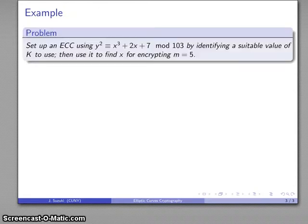For example, I have the elliptic curve y² = x³ + 2x + 7 mod 103. I'll identify a suitable value of k to use, then encrypt the message m = 5.